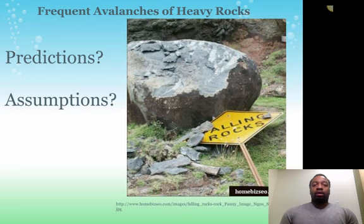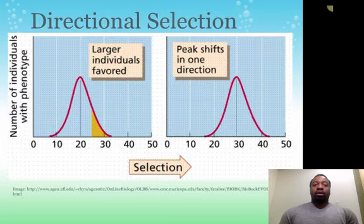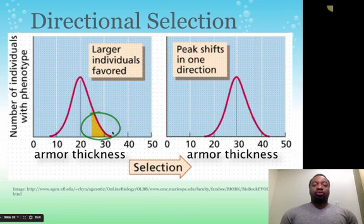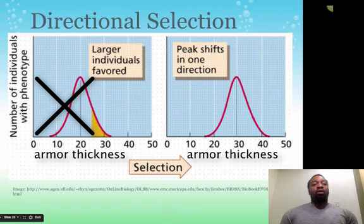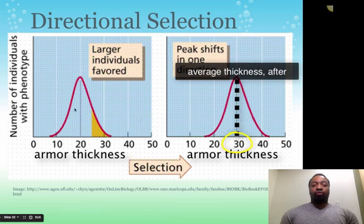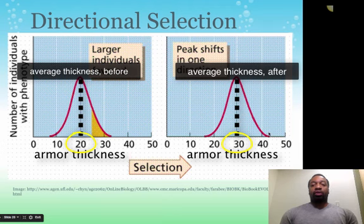So you've probably deduced that if we have a normal curve showing armor thickness — with intermediates in the middle and extremes on either side — the thicker armor robots will be favored. They will reproduce and pass down their traits, while the thinner-armored robots will start to die off because they're being hit with rocks. As a result, the curve will shift to the right — the middle of the curve moves from 20 to 30 — meaning more individuals now have thicker armor.